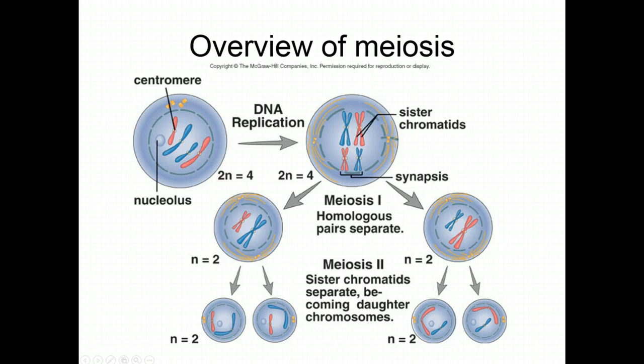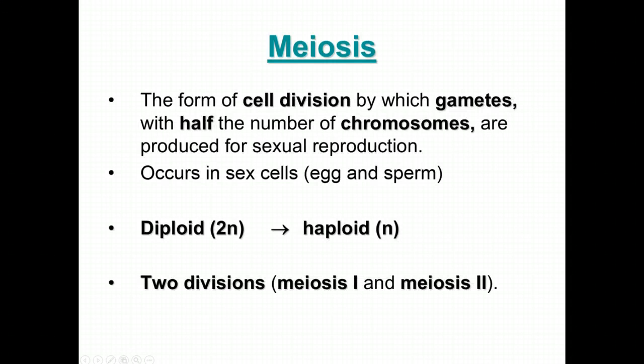Meiosis 2 looks a lot like mitosis. Meiosis is a form of cell division by which gametes, also known as sex cells in which half the number of chromosomes are produced, for sexual reproduction.